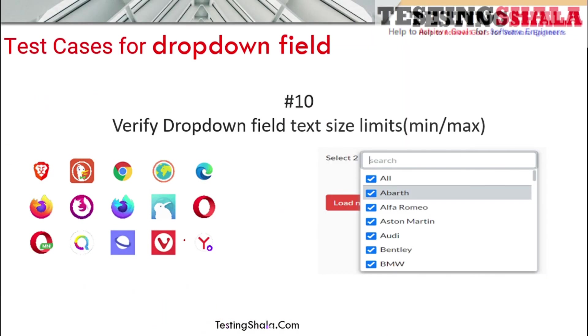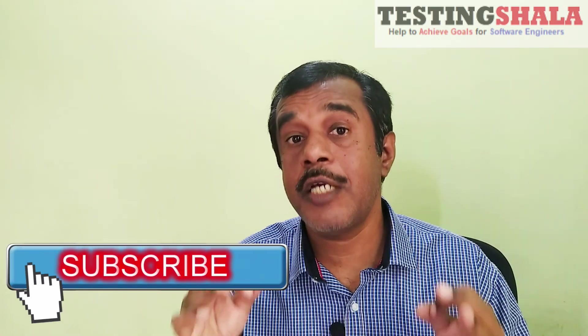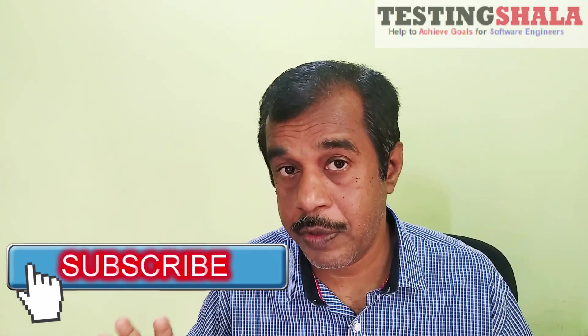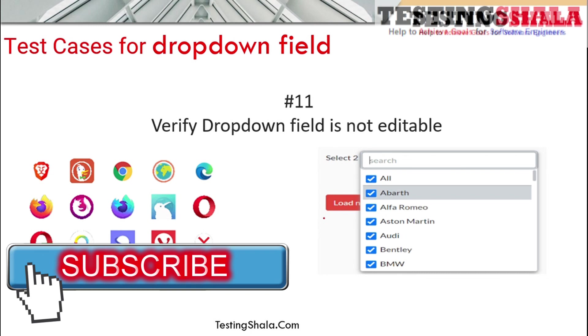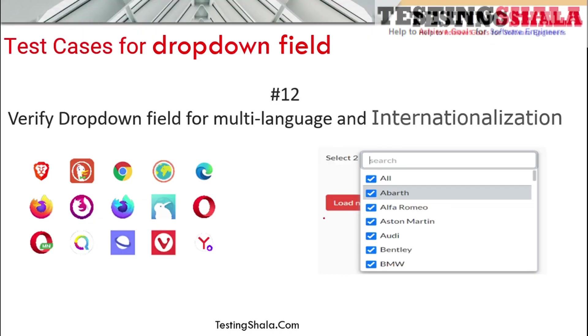You should write test cases for minimum and maximum values — what is the minimum and maximum value the dropdown can take. Next, validate whether a given dropdown field is editable or not editable. If it is not editable, you cannot select anything from it. If the requirement says it should be editable, test accordingly; if it is disabled, your test cases should cover that requirement too.